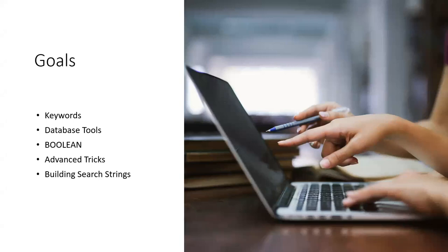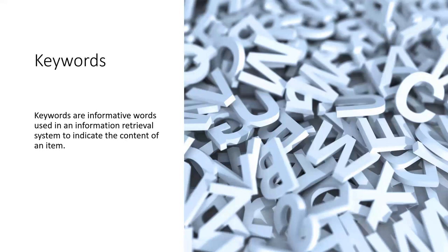We're going to look at keywords, search tools built into databases, Boolean operators, some advanced search tricks, and how you can put these all together to build search strings. Keywords are informative words used in an information retrieval system, like a library database, to indicate the content of an item. Keywords are the important terms, concepts, or phrases which you can use to help search in library databases or in other databases like Google. Keywords are a crucial part of your research — they are the key to starting your search and to finding the best sources. If your keywords aren't right, you'll have trouble finding articles and books that you can use.